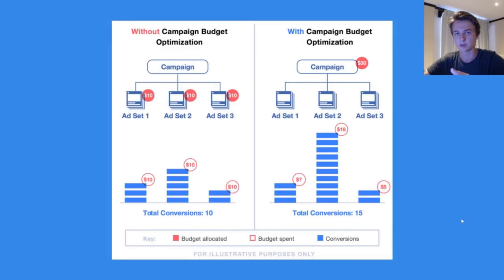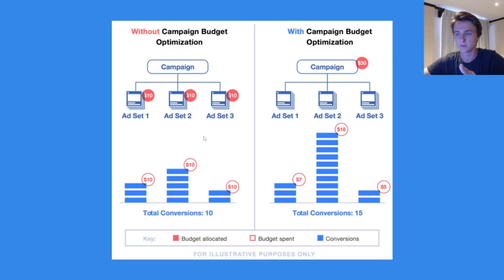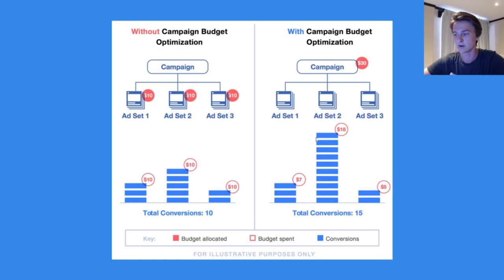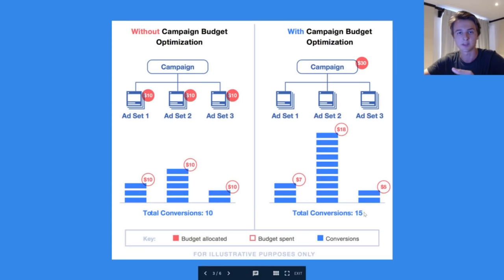This picture I pulled from Facebook does a great job explaining it. On the left, without CBO, there's no budget set for the campaign — it's set for each individual ad set — and no matter the performance it spends that budget. In the example you'd get 10 conversions even though ad set two was performing better with five conversions versus two. With CBO turned on, Facebook would spend much more on ad set two when it saw more purchases, resulting in 15 conversions for the same amount spent.